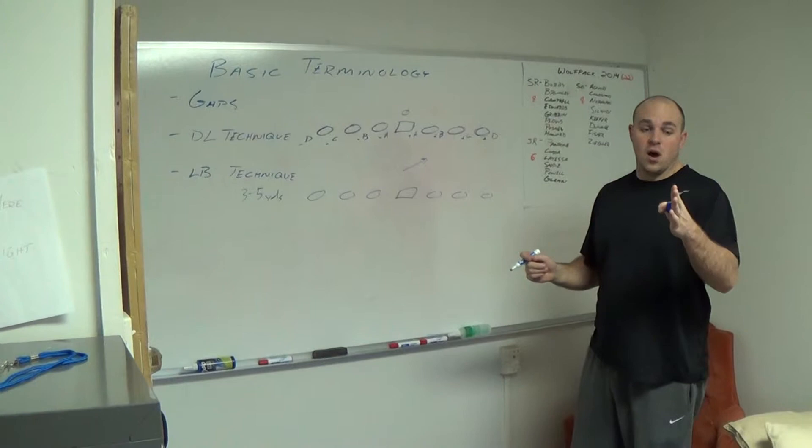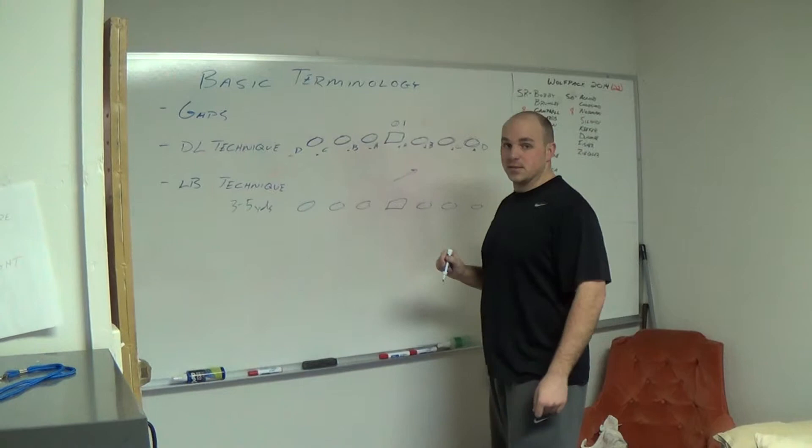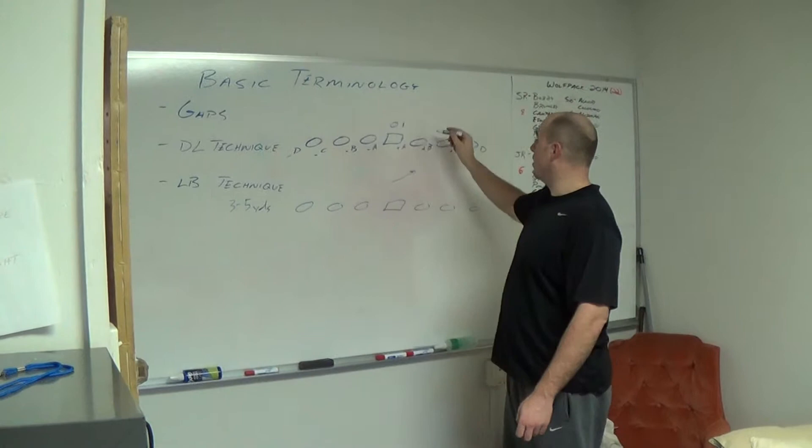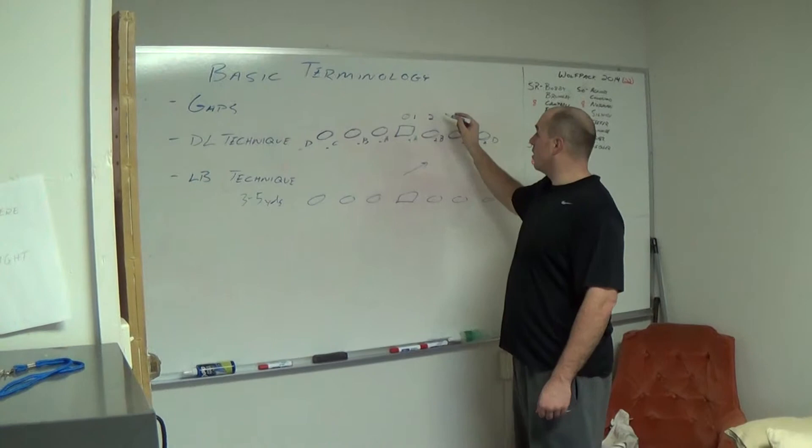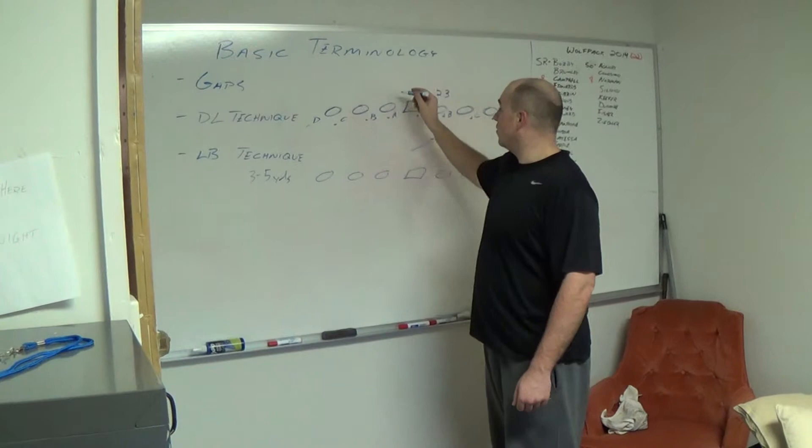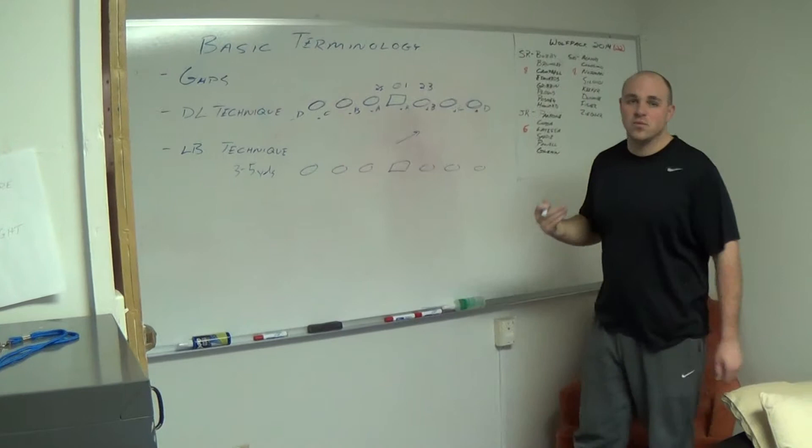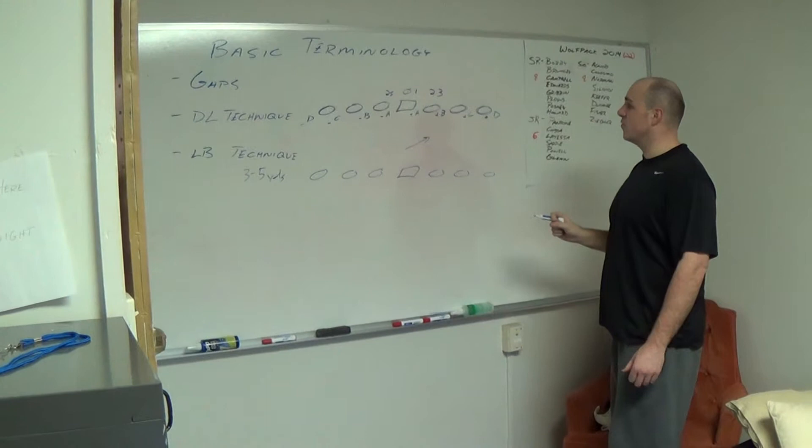If he's lined up on the shoulder of the center, we call that a one technique. Head up on the guard is called a two technique. Outside shade on the guard is called a three technique. Inside shade on the guard is a two designated with an eye, which means inside. We'll say two eye. This is the same both ways, I'm just trying to get as much information without it being cluttered for you.